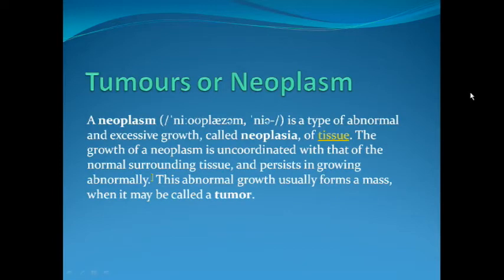Tumours or neoplasms are abnormal and excessive growth of tissues which is uncoordinated with that of the normal surrounding tissues. This growth persists in growing abnormally leading to the formation of a mass. This mass or swelling is then known as a tumour.